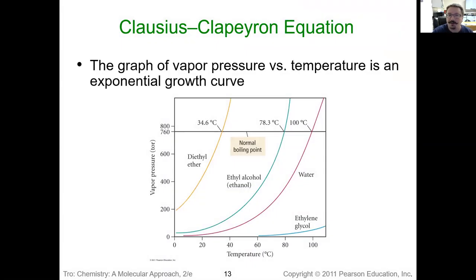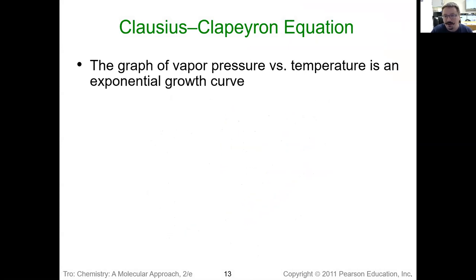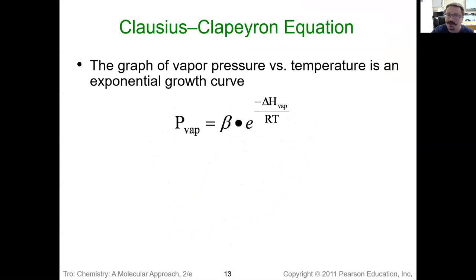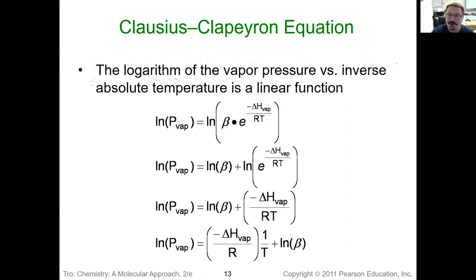This brings us to the Clausius-Clapeyron equation. You'll notice that all of these vapor pressure curves are exponential curves. Scientists are incredibly lazy — we like straight lines because they're easier to work with and the equation of the line is much simpler. So what we want to do is see how we can turn this into a straight line instead of that exponential curved line. You don't have to worry about this math, but this is the manipulation done to the original equation to get it to the equation of a straight line.